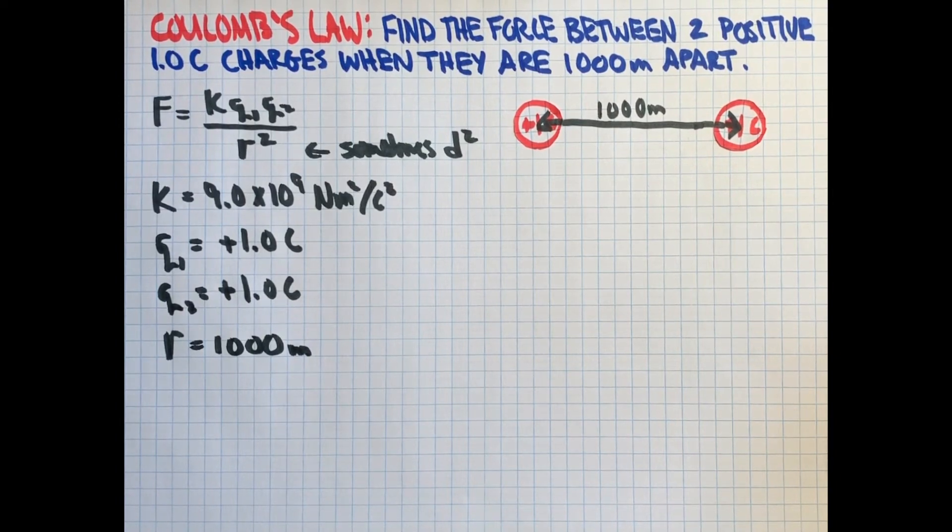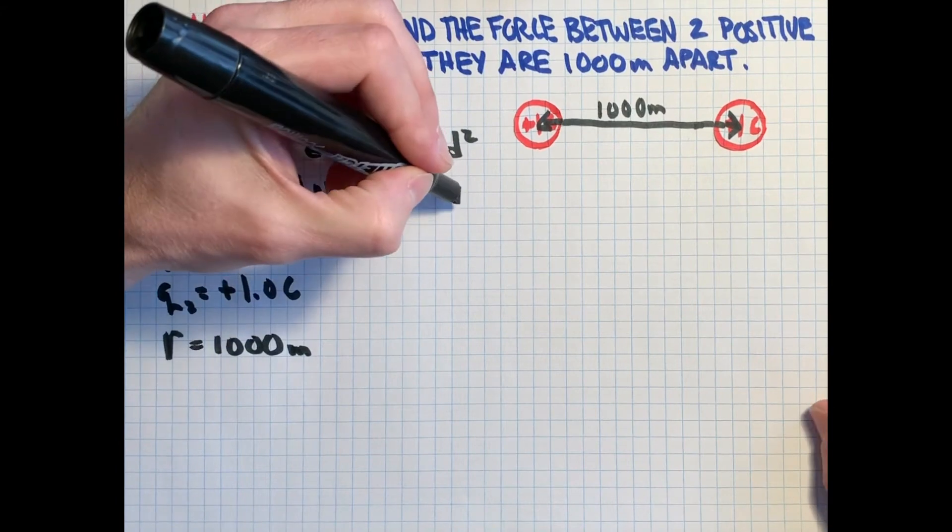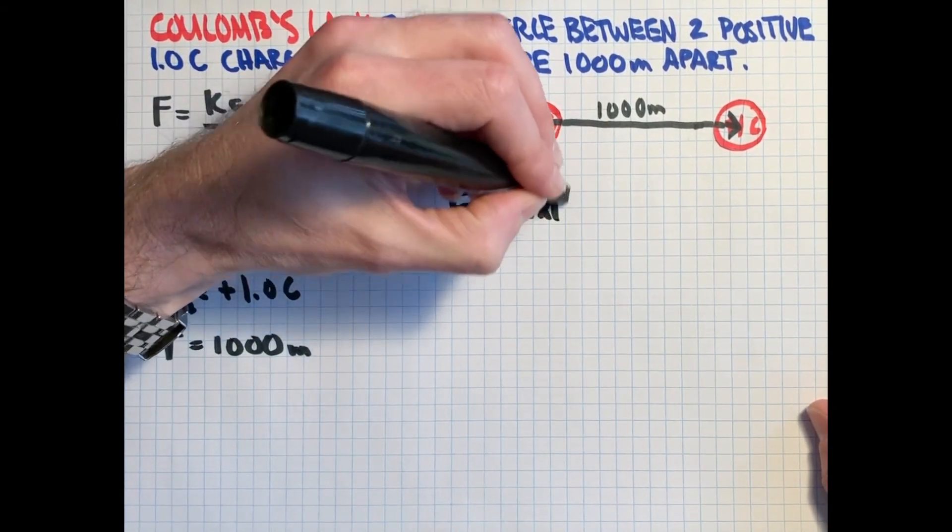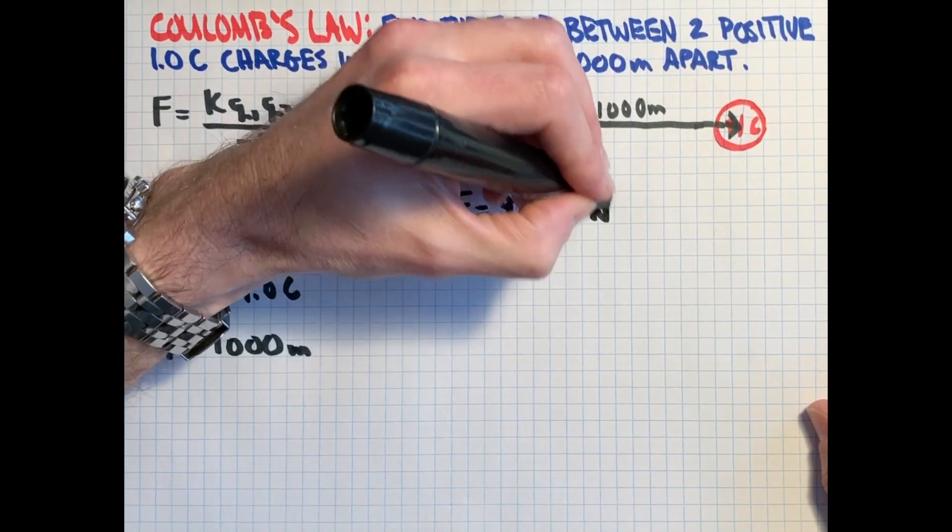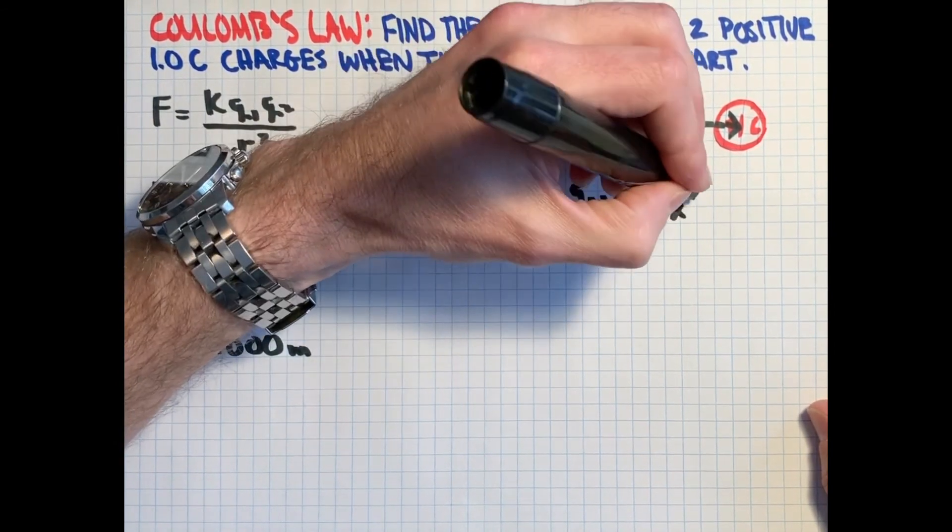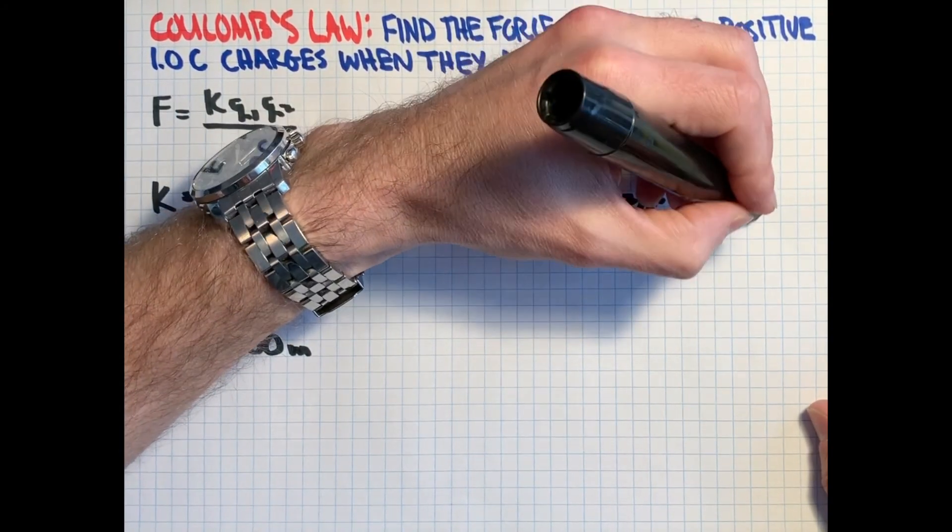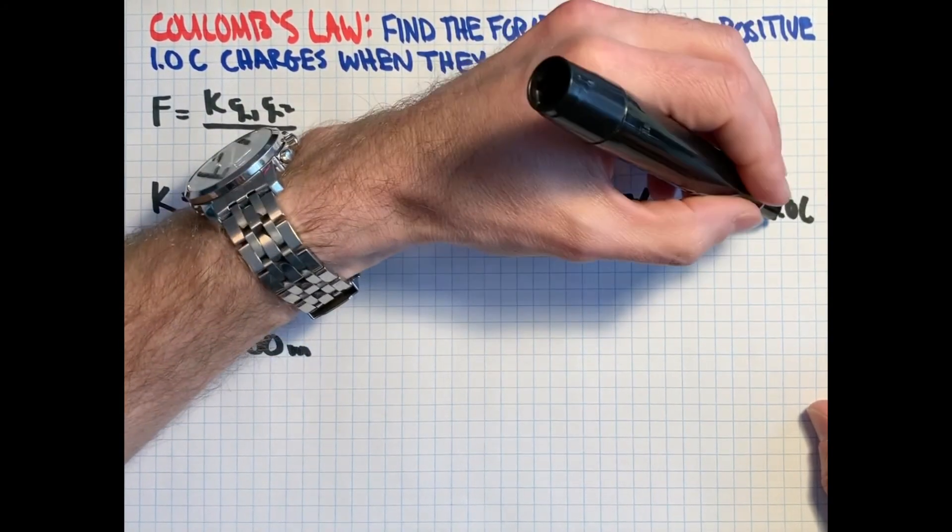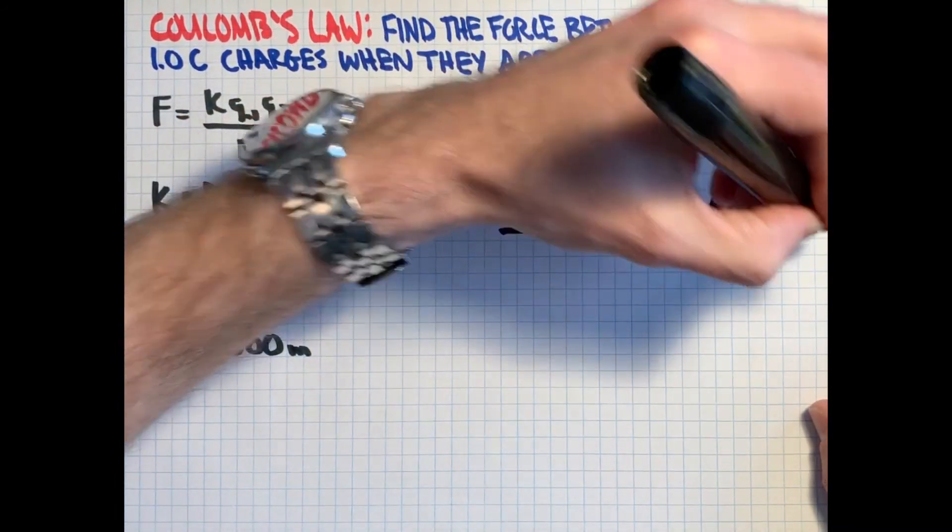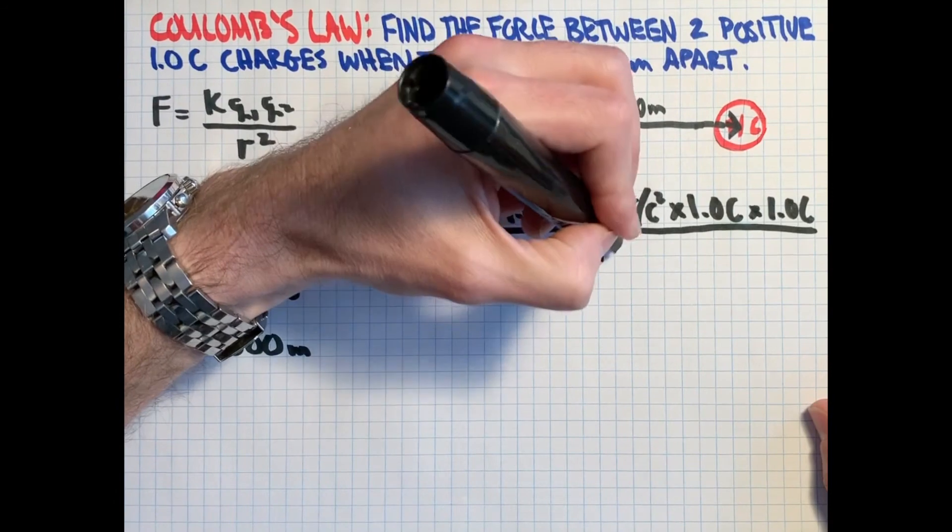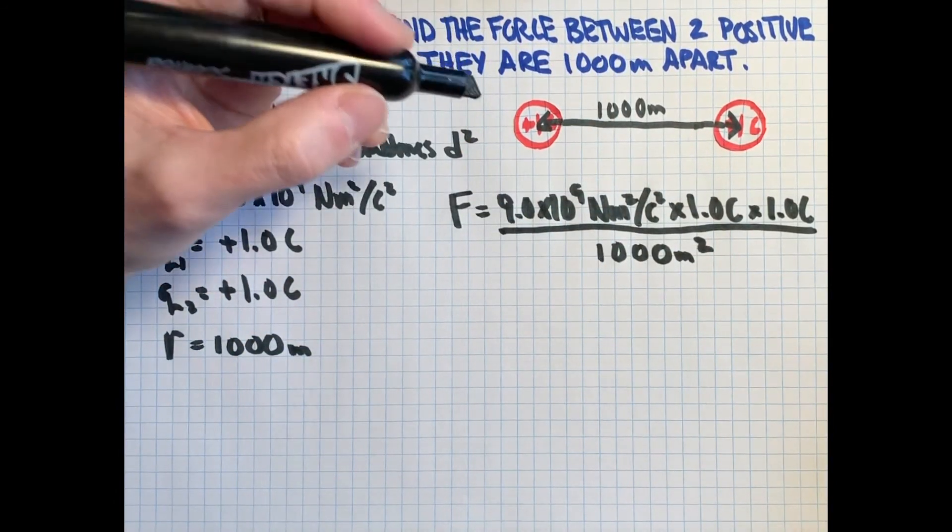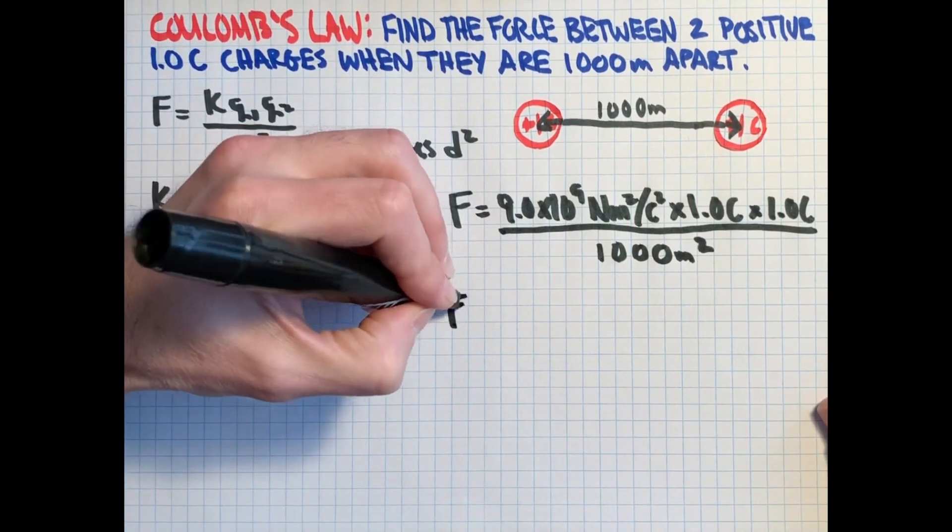So we have all those values. Now we're going to stick them into the equation. So F equals 9 times 10 to the 9 newton meters squared per Coulomb squared times 1 Coulomb, positive 1 Coulomb, times positive 1 Coulomb. I'd put my negative signs in there if they were negative. And on the bottom, we have 1,000 meters squared, which is easy. That's going to be a million.